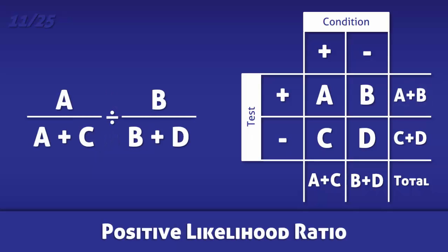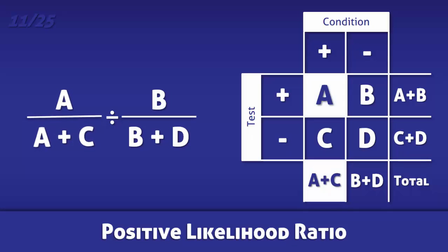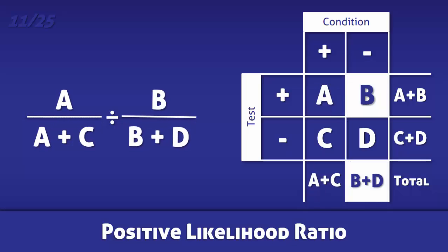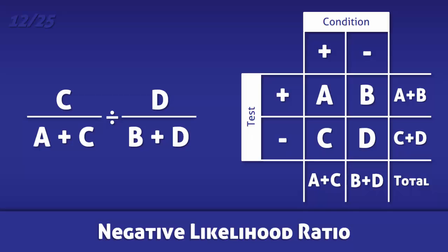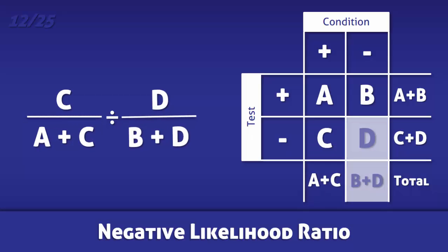For the positive likelihood ratio, divide the true positive rate, which is the sensitivity, by the false positive rate. For the negative likelihood ratio, divide the false negative rate by the true negative rate, or the specificity.